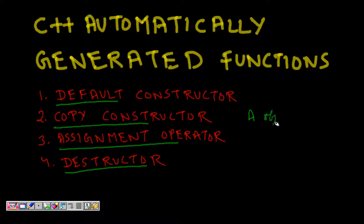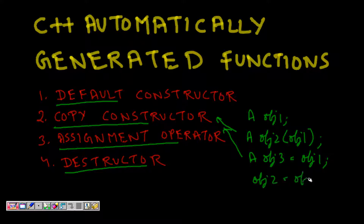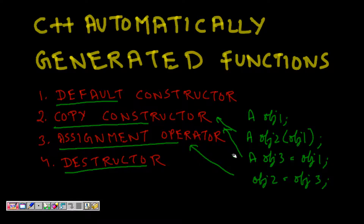If I have class A and I write 'A object1', a default constructor will be called. If I write 'A object2(object1)', this will call the copy constructor. If I write 'A object3 = object1', this will also call the copy constructor. And if I write 'object2 = object3', this will call the assignment operator. Because these are all valid operations, C++ needs to create these functions even if you don't write them explicitly.